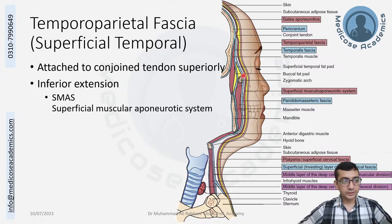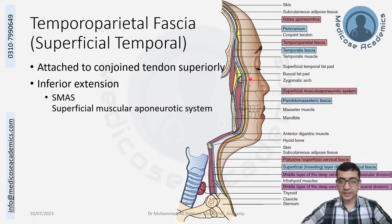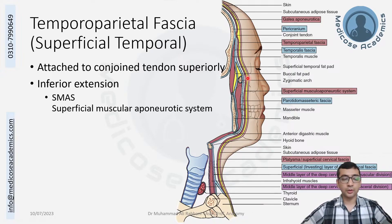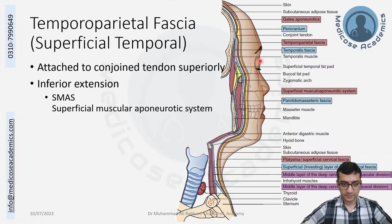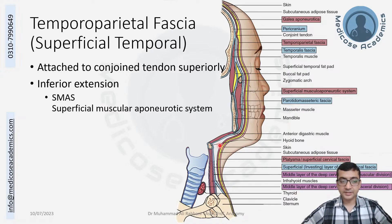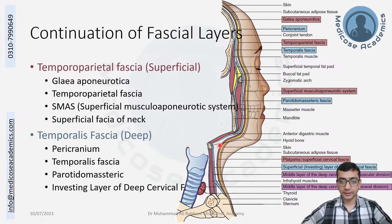Moving downward, the temporal parietal fascia passes lateral to the zygomatic arch. On the lateral aspect of the cheek it merges with the superficial musculo-aponeurotic system, which includes the smooth and skeletal muscles covering the face. Continuing downward, it becomes continuous with the superficial fascia of the neck, including the platysma muscle.